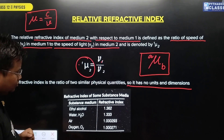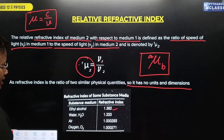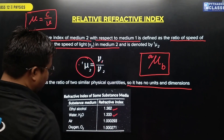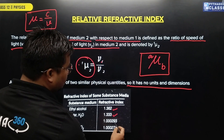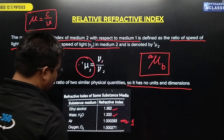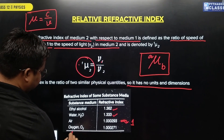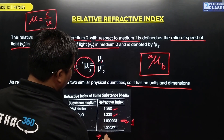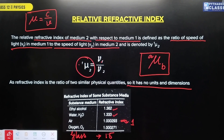For example, the refractive index of glass is 1.362 or 1.333 for water, the refractive index of air is 1.0002, and the refractive index of diamond is 2.442.